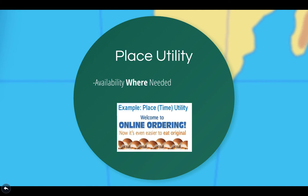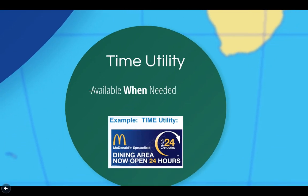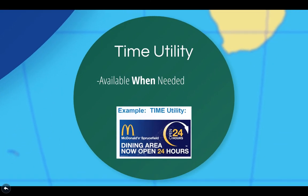Place utility is the idea of making products available where they are needed by customers — products are moved from areas where they are not needed to areas where they are. For instance, winter gloves serve very little purpose in Southern California or Florida, but are highly desired in the winter months on the eastern seaboard or around the Great Lakes areas. Time utility is related to place utility in that products are made available to customers when they need them. There's no need for winter gloves even in the northern eastern seaboard in the middle of a summer heat wave.